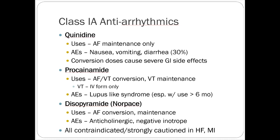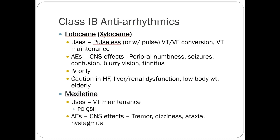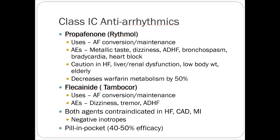Class 1A antiarrhythmics aren't very common medications, and they're all contraindicated or strongly cautioned if you have heart failure or MI, which limits their use. Propafenone and flecainide are probably the two more common ones — class 1C. Flecainide is maybe the most common class 1 agent; it's an AFib conversion and maintenance agent. By AFib conversion, I mean you can give a large dose to get somebody out of AFib acutely.